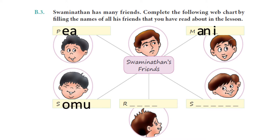And whose name starts with R and has five letters? That's Rajam — R, A, J, A, M. Rajam.